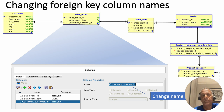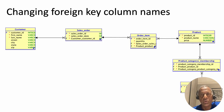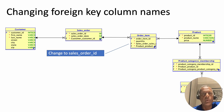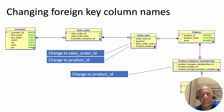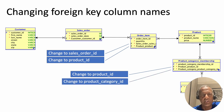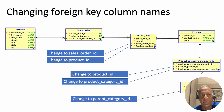This step is optional but I would suggest you do it. We want to do the same thing to all the other foreign keys. For example, in Order Item, we change 'sales_order_sales_order_id' to just 'sales_order_id', and 'product_product_id' to just 'product_id'. In the Product Category Membership entity type, we again change 'product_product_id' to 'product_id', 'category_id', and finally 'parent_category_id'.